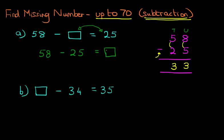And therefore, the answer to our question is 33. 58 minus 25 is 33. And we can write this in our original question. 58 minus 33 equals 25. The missing number was 33.